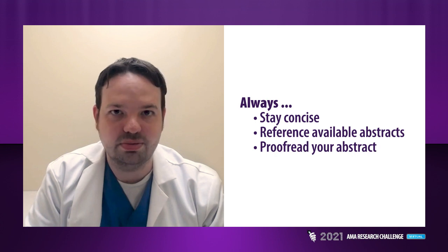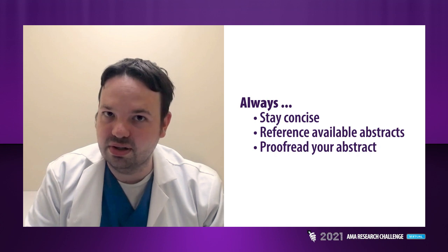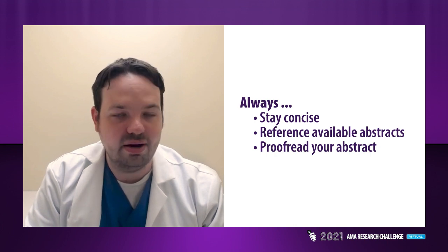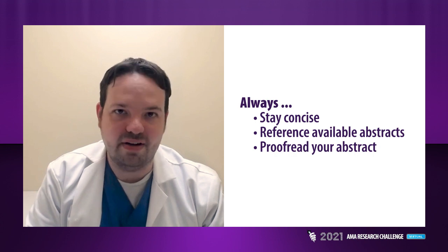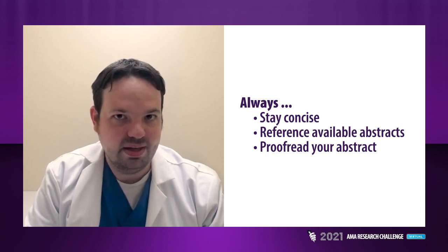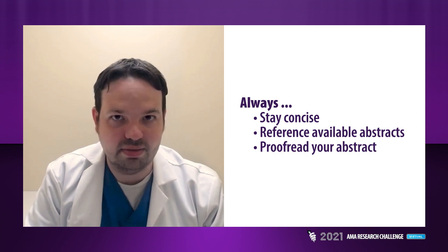Always stay concise in the abstract. You don't want to be too wordy — this is not like writing a poem or a novel, it's writing a research abstract. For guidance, you may want to look at some available abstracts online in papers written in your field. Good examples of abstracts are a good way to get started. Always proofread and revise your abstract. Make sure you are submitting using the approved template found on the Research Challenge website. It's also good to get a friend or family member to read over it to make sure you haven't missed something.